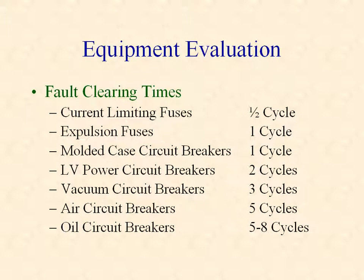To better understand the concepts behind equipment ratings and proper selection, it's important to know that fault clearing times are different for each type of protective device. For example, current limiting fuses and breakers operate in less than one-half cycle for high currents in the current limiting range. Expulsion fuses and molded case breakers operate in about one cycle. Low voltage power circuit breakers operate in two cycles. Medium and high voltage breakers operate in three to eight cycles. Different operating times mean that the protected devices are subjected to fault current and resulting mechanical stresses for differing amounts of time.